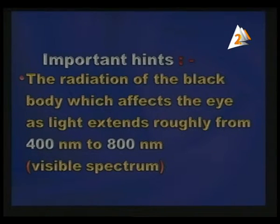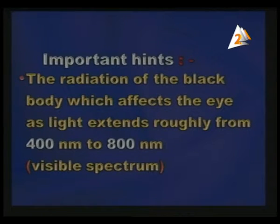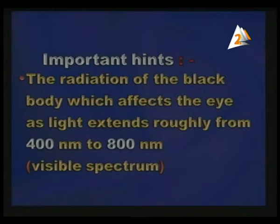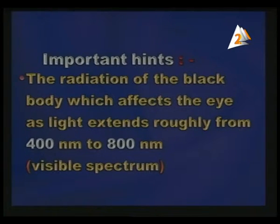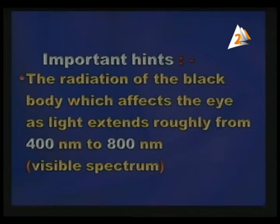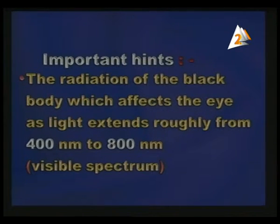The radiation of the black body which affects the eye as light extends roughly from 400 nanometers to 800 nanometers. 800 is the red, and 400 is the violet or blue. This is the visible spectrum.